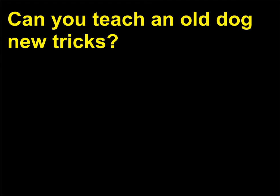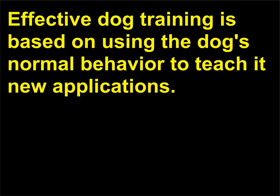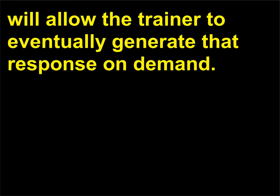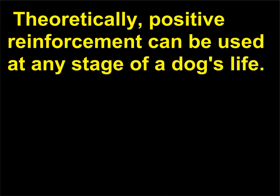Can you teach an old dog new tricks? Effective dog training is based on using the dog's normal behavior to teach it new applications. For example, rewarding Fido when he randomly performs the desired behavior will allow the trainer to eventually generate that response on demand. Theoretically, positive reinforcement can be used at any stage of a dog's life.